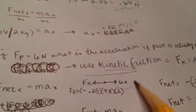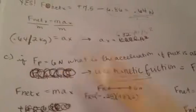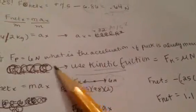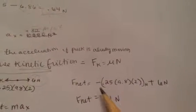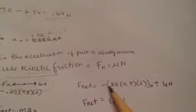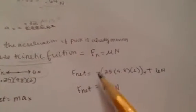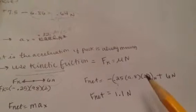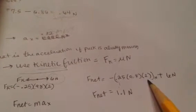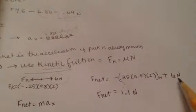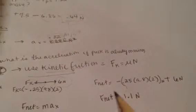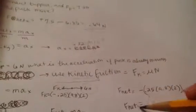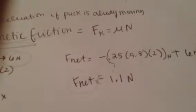The pushing force is now 6 newtons. What is the acceleration if the puck is already moving? F_net equals negative 0.25 times 9.8 meters per second squared times 2 kilograms — that's the kinetic friction term in the negative x-direction — plus 6 newtons in the positive x-direction. That gives an F_net in the x-direction of 1.1 newtons.